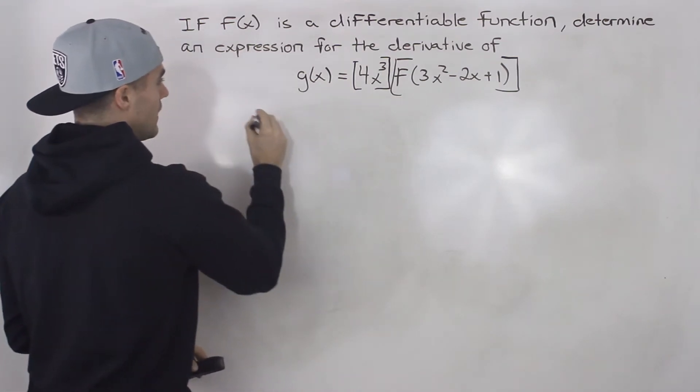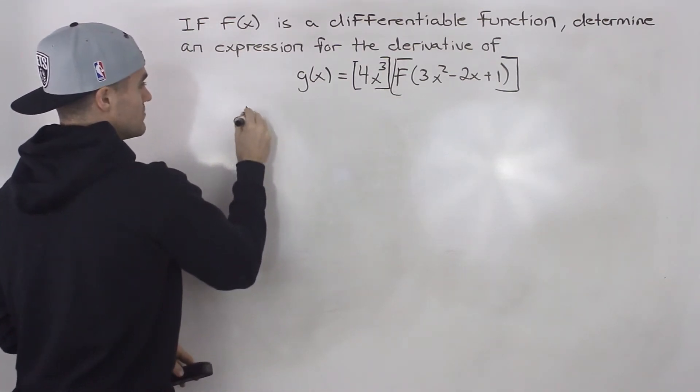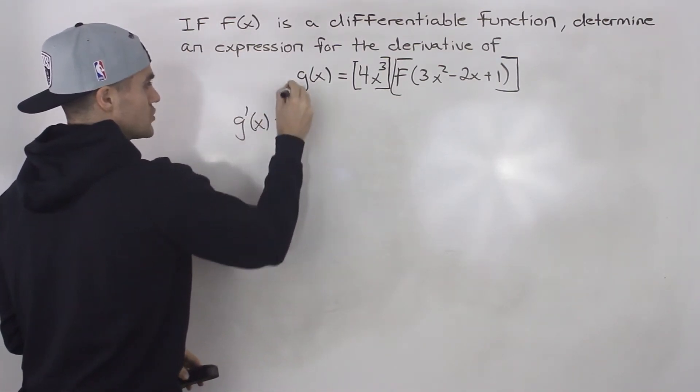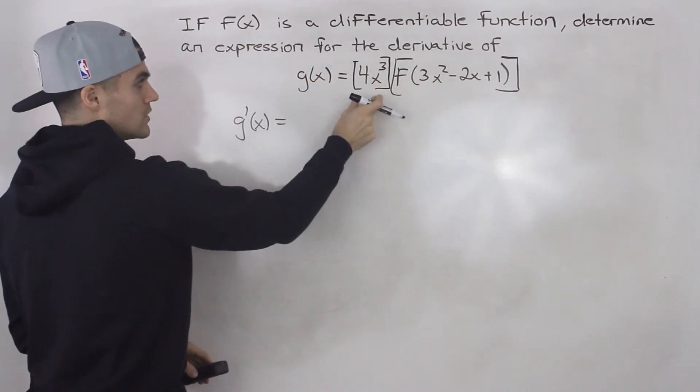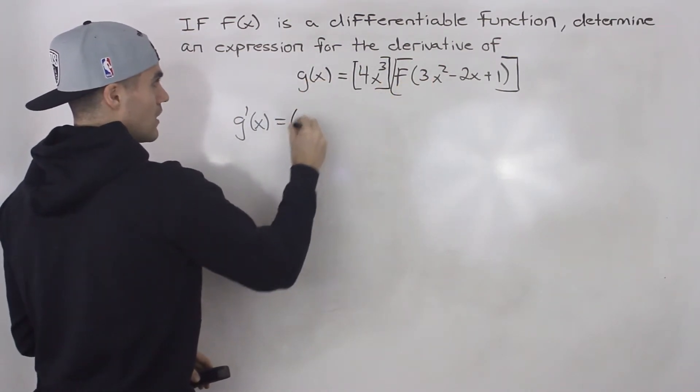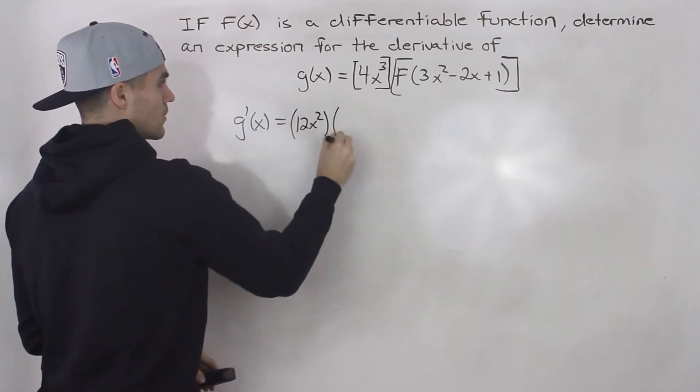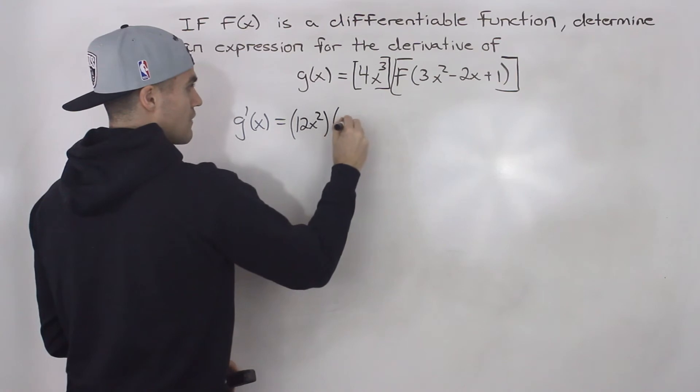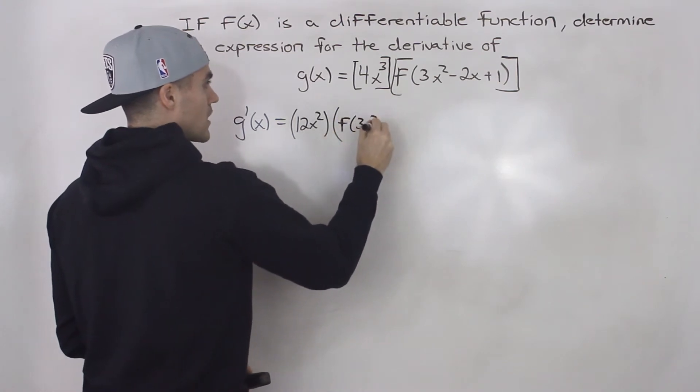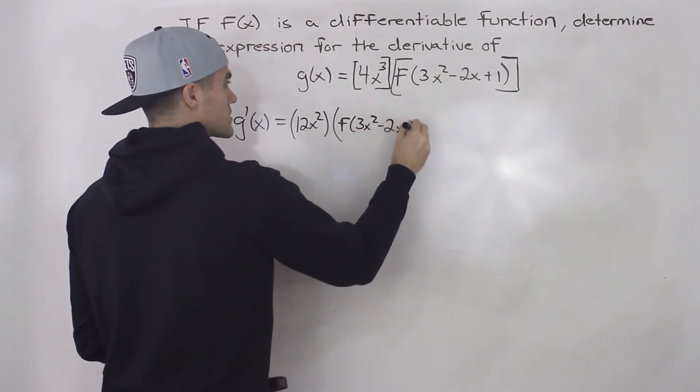To find an expression for g'(x), the derivative of g(x), we're going to use the product rule. We take the derivative of 4x³, which is 12x². We're going to multiply it by f of 3x² minus 2x plus 1.